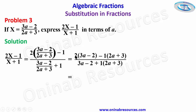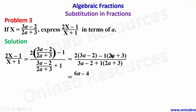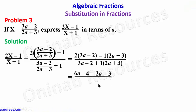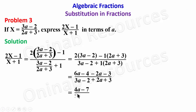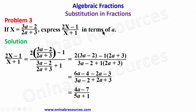In our expansion from the numerator, 2 times 3a gives 6a, 2 times negative 2 gives negative 4, then negative 1 times 2a gives negative 2a, and negative 1 times 3 gives negative 3. For the denominator, 3a minus 2 plus 2a plus 3. Simplifying the numerator, 6a minus 2a gives 4a, and negative 4 minus 3 gives negative 7. For the denominator, 3a plus 2a gives 5a, and negative 2 plus 3 gives positive 1. We have successfully expressed the expression in terms of a, given that x is 3a minus 2 over 2a plus 3.